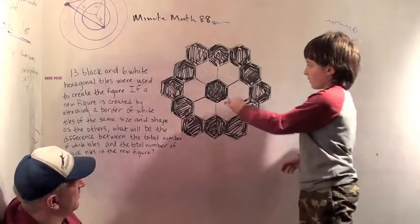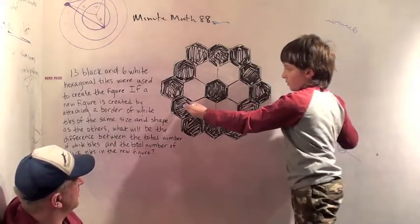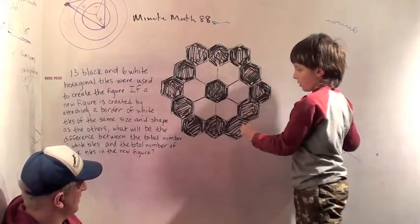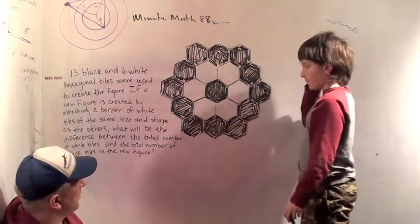This middle one and these outside right. Can you count to thirteen? Show me. One, two, three, four, five, six, seven, eight, nine, ten, eleven, twelve, thirteen. Okay, how many white tiles do we have?